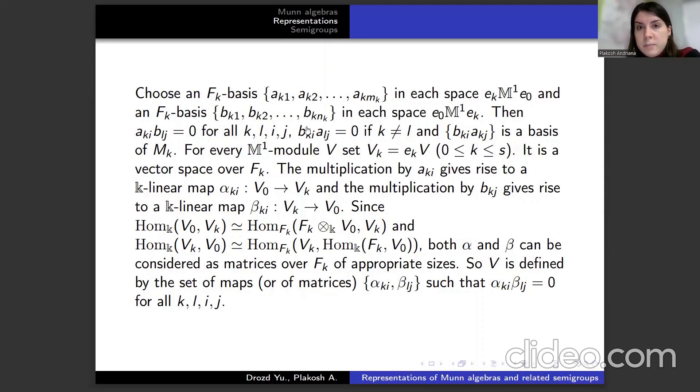And if we multiply elements from second by elements from first, we have 0 if k not equal ℓ. And the product of bₖᵢ on aₖⱼ is the basis of Mₖ.